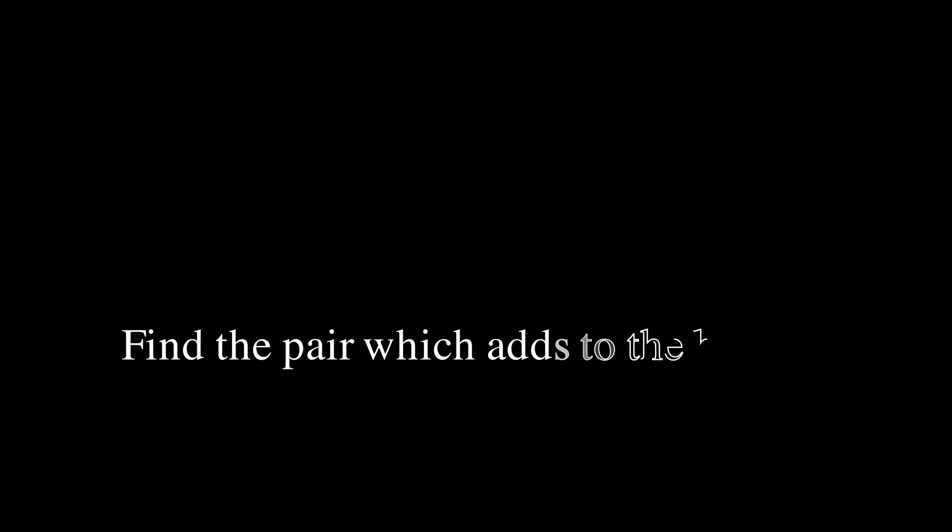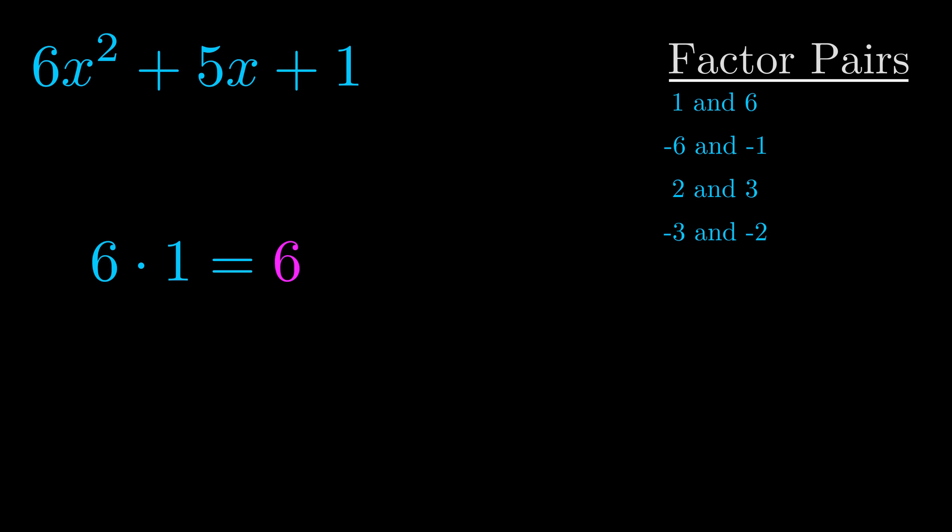The b value is the coefficient on the x term. That's the middle term, the one that we haven't done anything with yet. And really this is the only factor pair that we need.